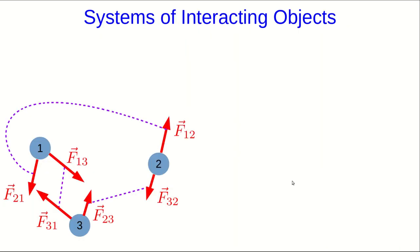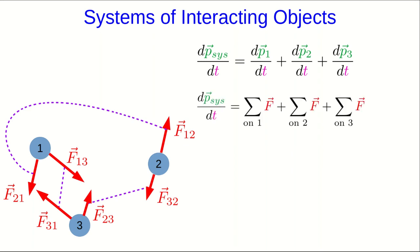Let's think of a system of objects interacting with each other via some forces, but not interacting with anything else. So notice this is an isolated system. And we can think of the rate of change of its momentum, which is just the sum of the rates of changes of the momentums of each object. Each of those rate of change of momentums is just a vector sum of forces.